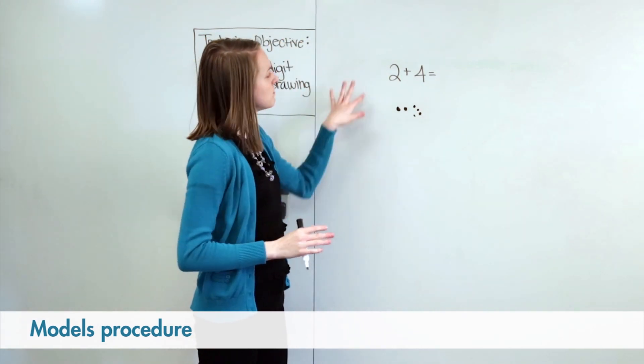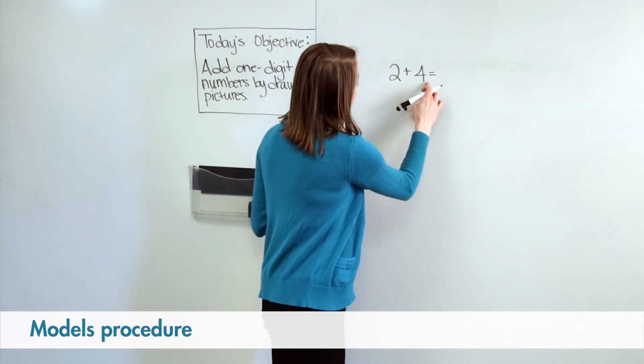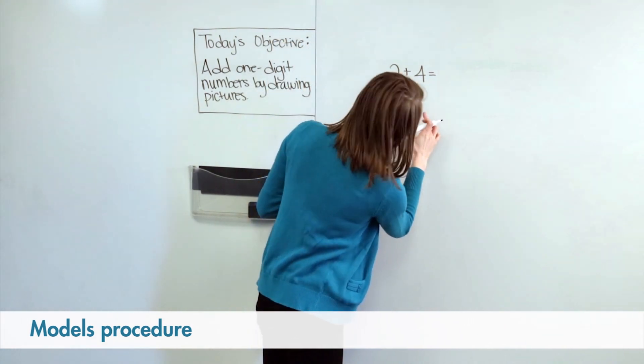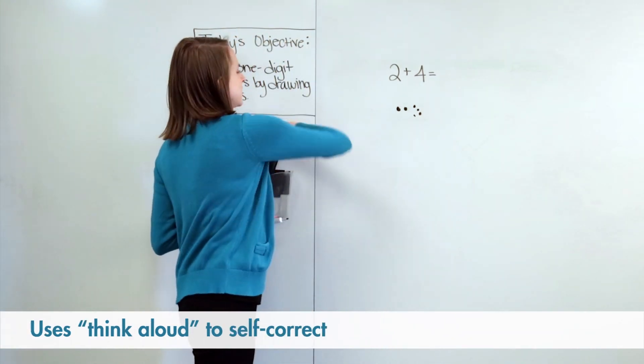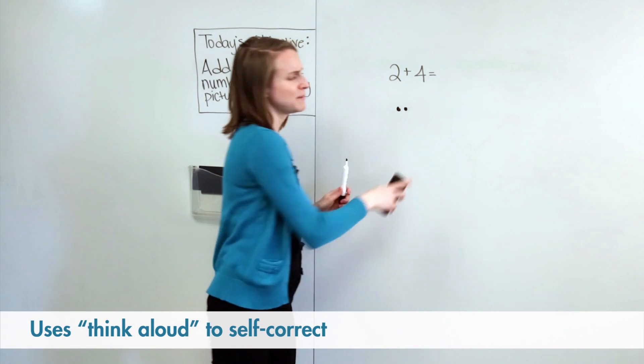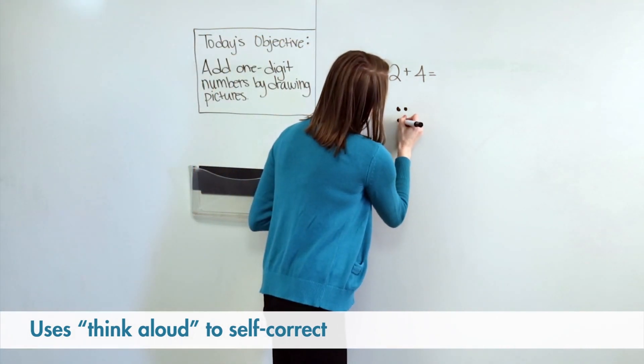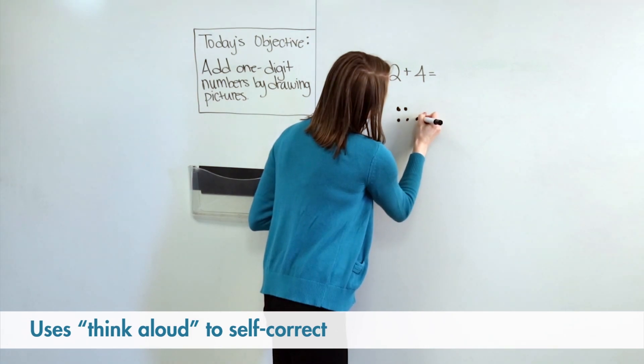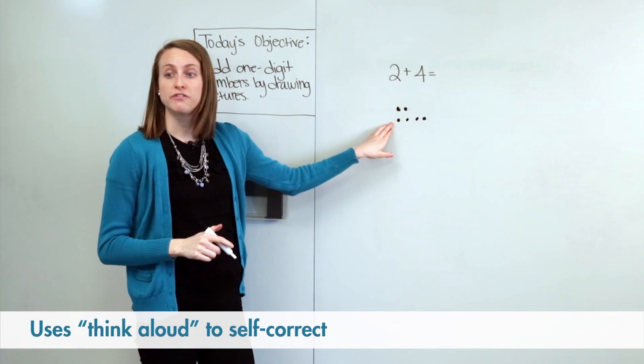Now I want to make sure that my picture matches the problem. So I'm going to count and make sure I have one, two. And then here I have one, two. You know those dots are kind of messy. If I'm going to be drawing a picture, I need my dots to be nice and neat. So I'm going to draw my dots down below, two, three, four. Now I've drawn four dots.